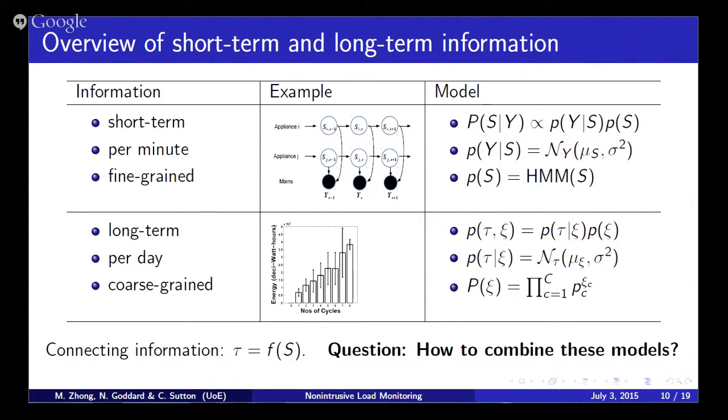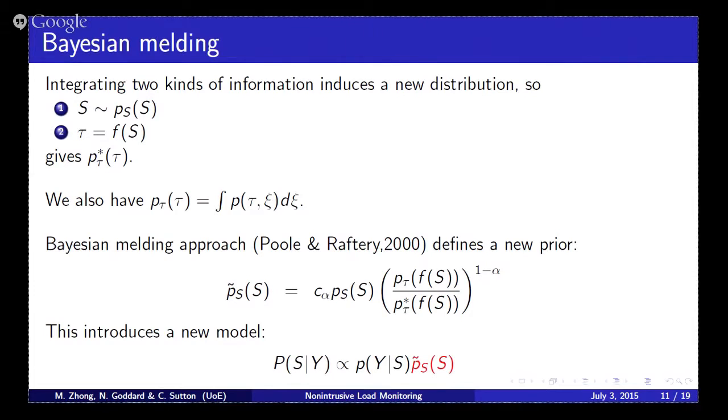We employed BSC melding. The idea is that we're pushing the information in the top, which is the summary statistics, into the short-term information, which is the state of the hidden Markov models. This will form a new distribution of the HMMs. Here is the basic hidden Markov model. This part has the information, which is the summary statistics. We use the basic Bayes rule to define a new model. Then we make an inference.